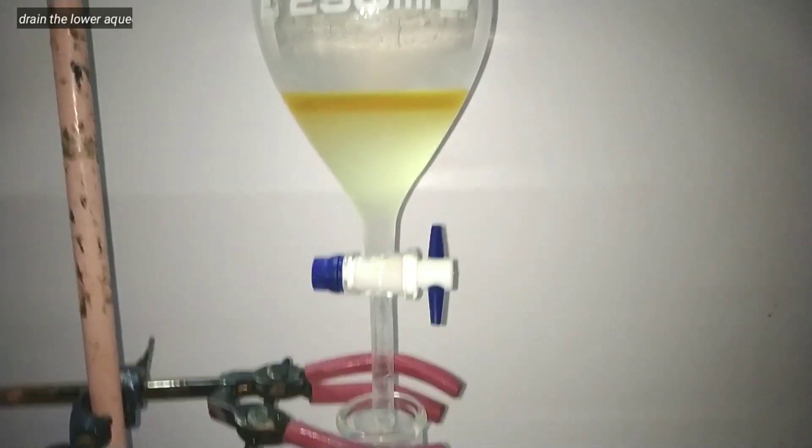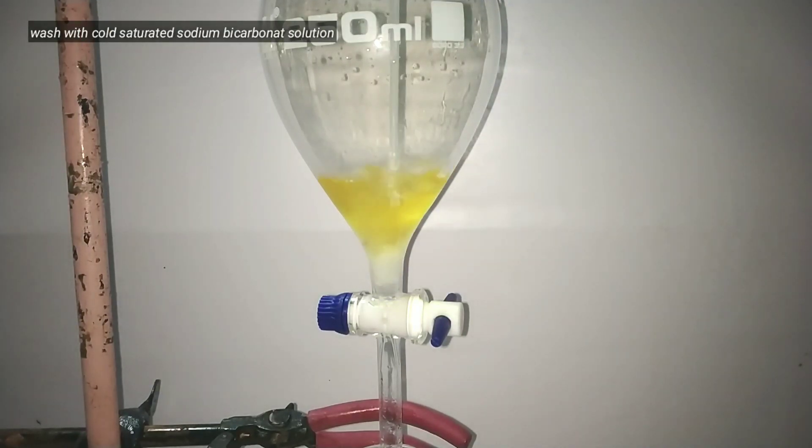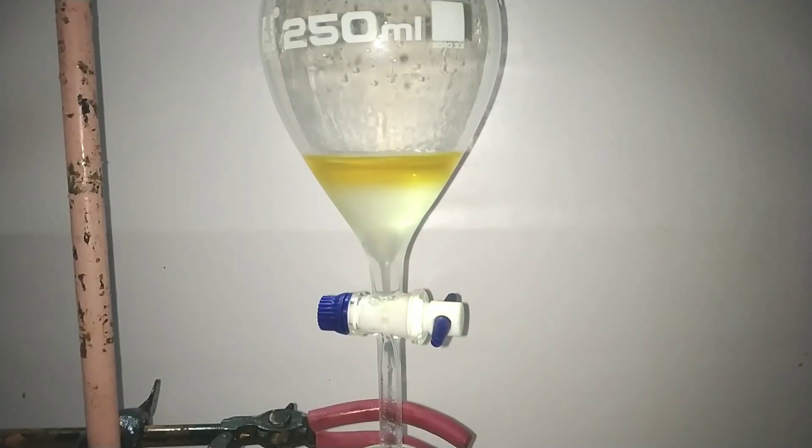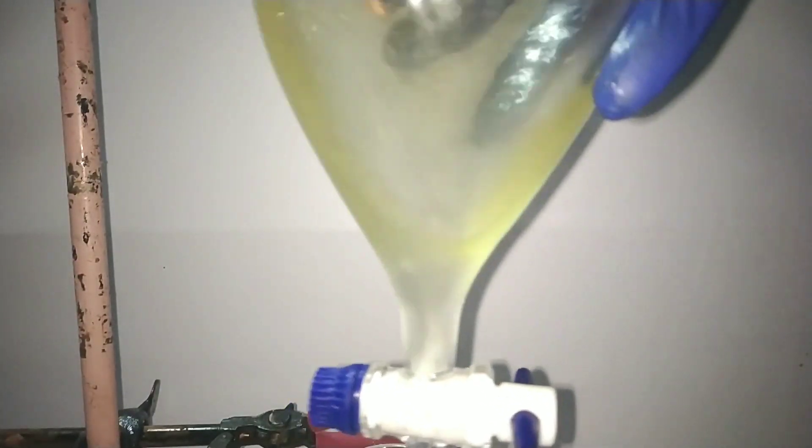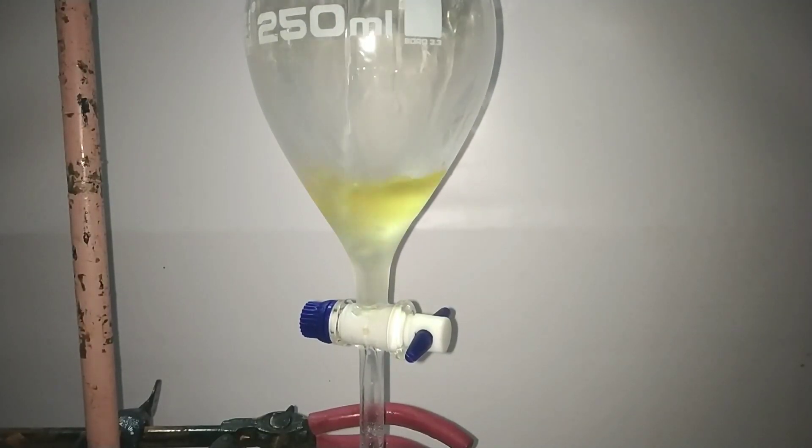After the complete reaction, we transfer the contents to a separatory funnel and separate the upper isopropyl nitrite layer. Now wash the crude isopropyl nitrite with some saturated sodium bicarbonate solution. I did two to three washings and after each addition the separatory funnel was capped, shaken, and vented to remove the excess acid.